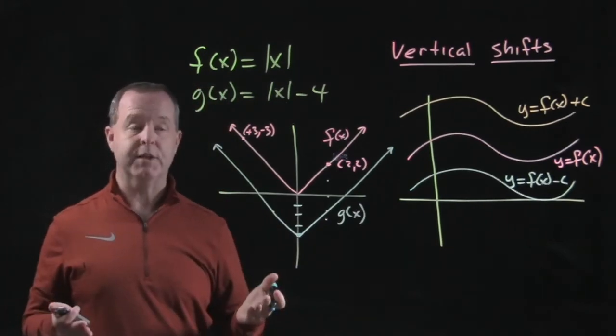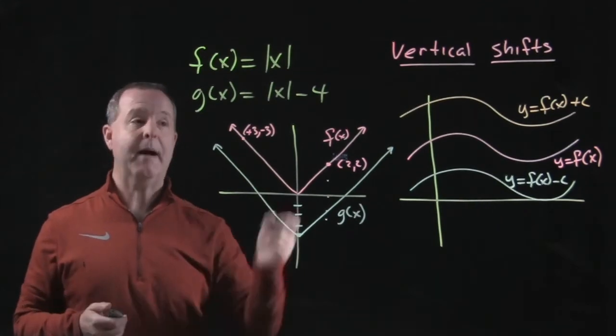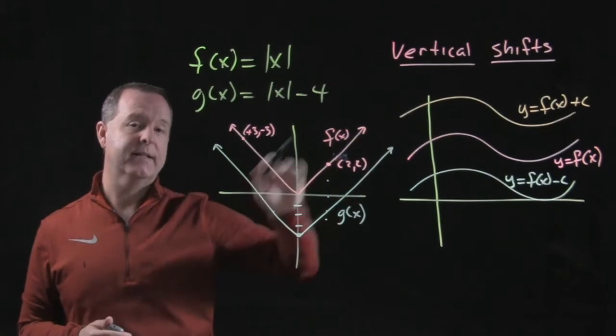So through transformations, we can vertically shift a function up or down. And we do that by looking at our function and asking is there anything added to that? Any constant?